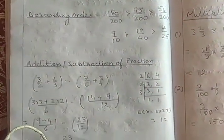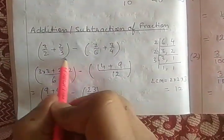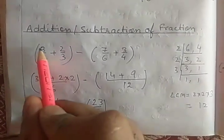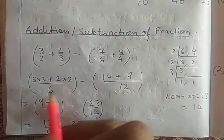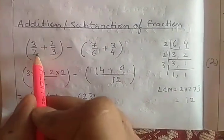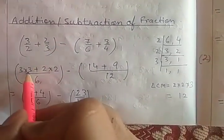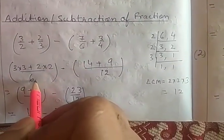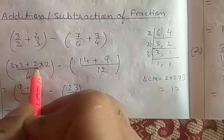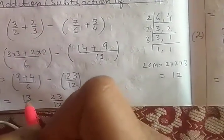For addition and subtraction of fractions, you have already studied BODMAS in class 6 — perform operations within braces first. Take the LCM of 2 and 3, which is 6 because they are both prime numbers. 2 into 3 gives 6, so 3 will multiply with 3 to give 9. And 2 into 2 gives 4. So 9 plus 4 gives 13 upon 6.